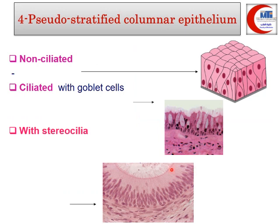Pseudostratified columnar epithelium contains two types of cells: tall cells that reach the surface and short cells that do not, but both rest on the basement membrane. Their nuclei are at different levels, giving a false impression of multiple layers — hence 'pseudo' stratified. It is actually a single layer.